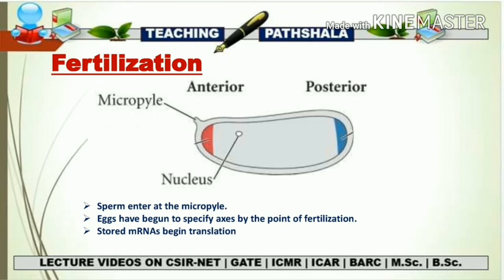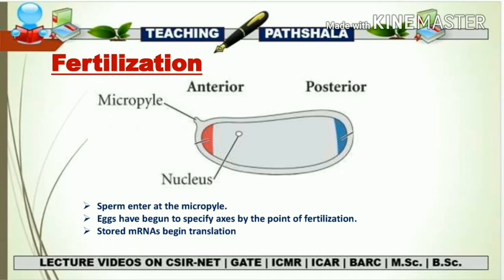So first we are going to talk about fertilization. This is the egg of Drosophila in which you can see the anterior and posterior axis, although this axis is not determined yet — it determines after fertilization. Just for convenience I have kept the polarity so you will know which side is the micropyle region and which is the side of the nucleus. In fertilization, the sperm enters through the micropyle region, and the egg has begun to specify the axis by the point of fertilization.